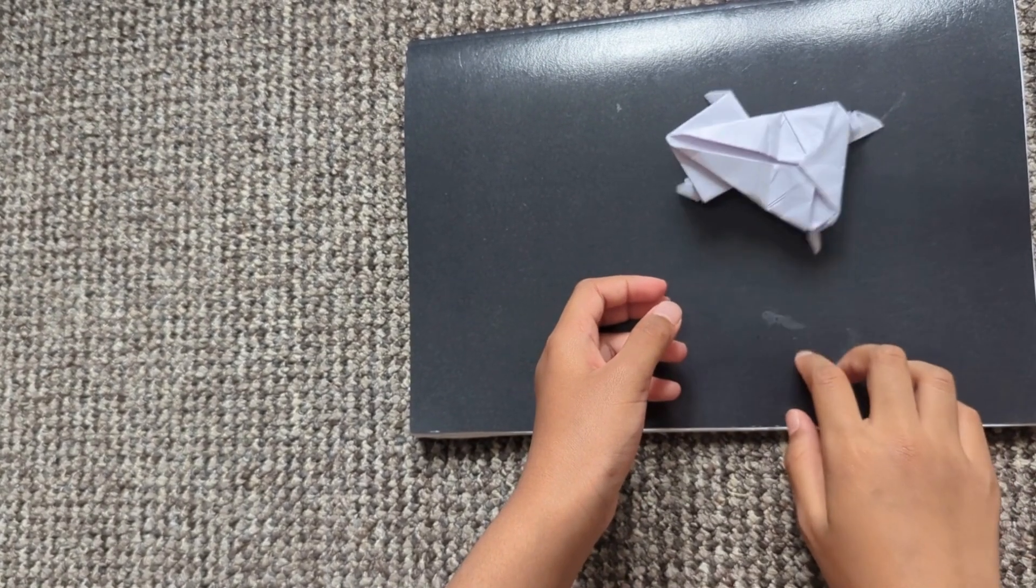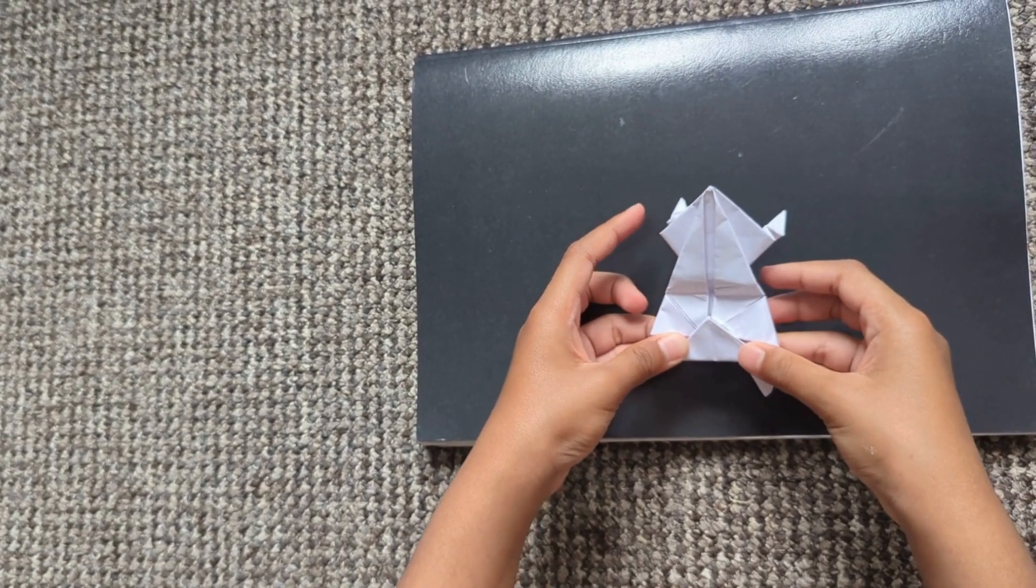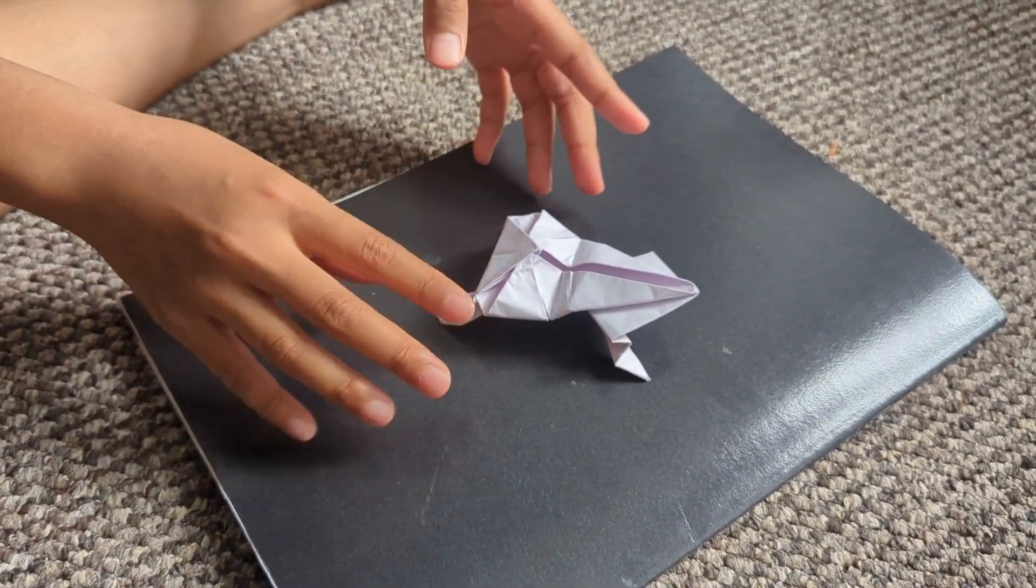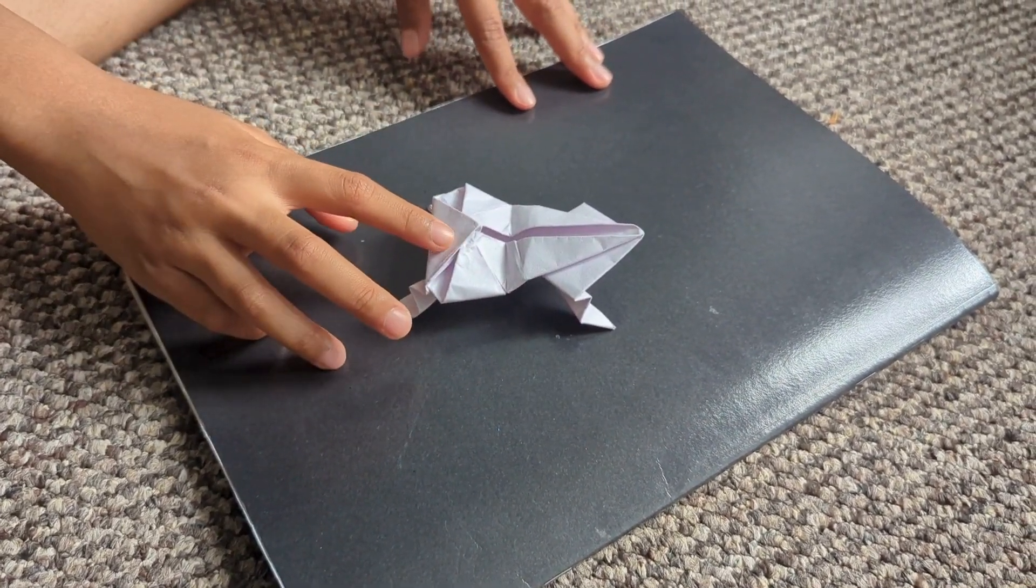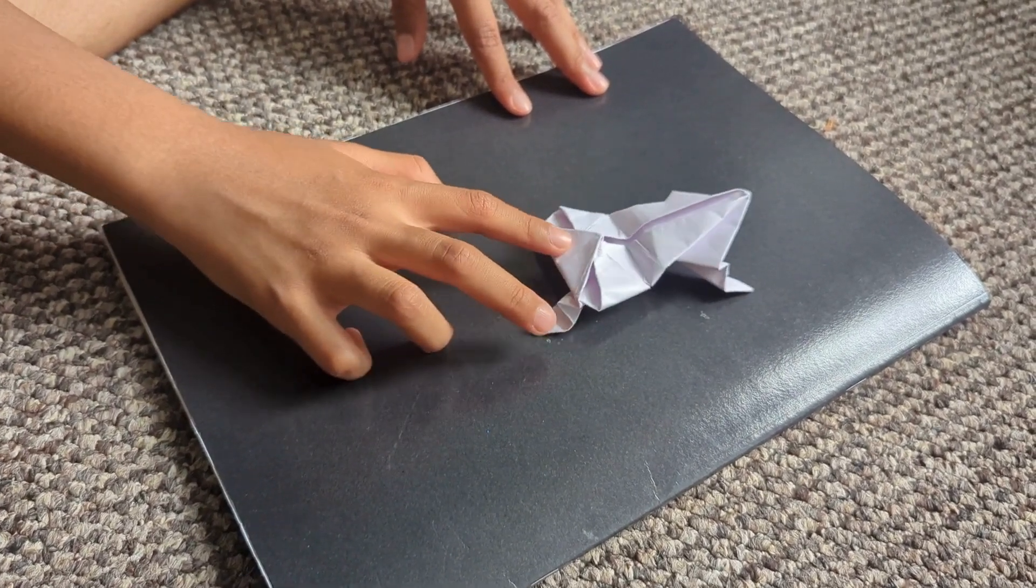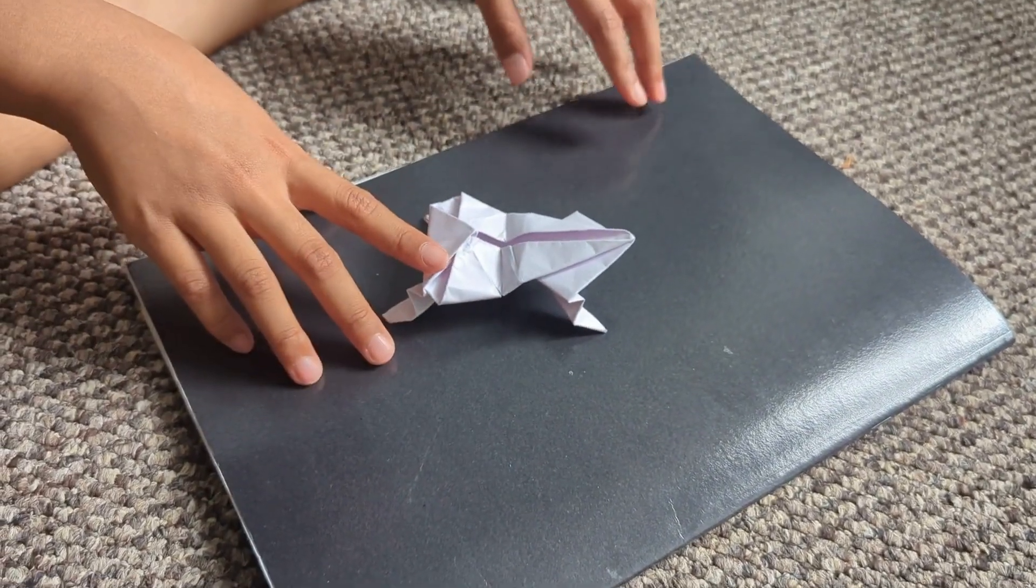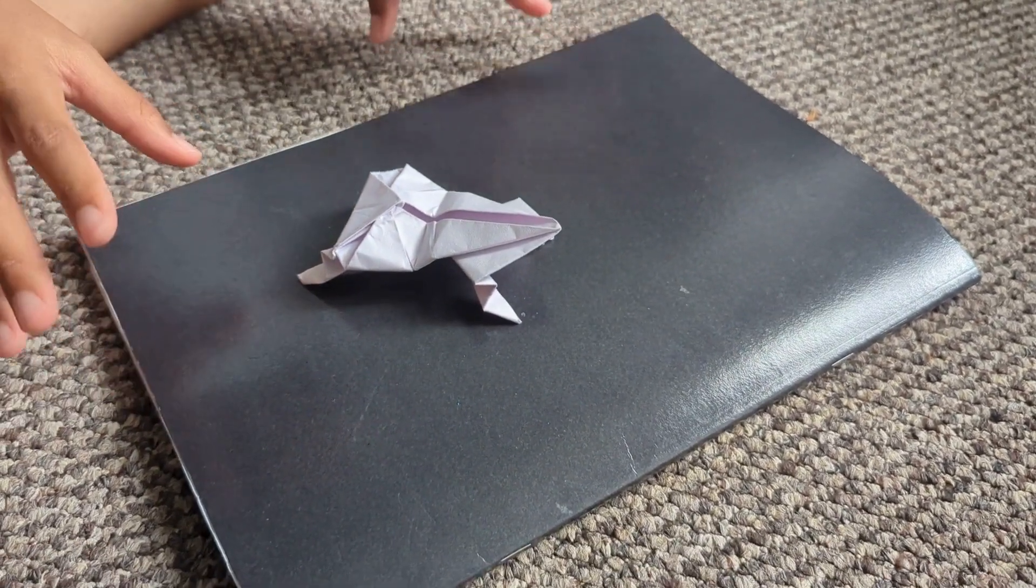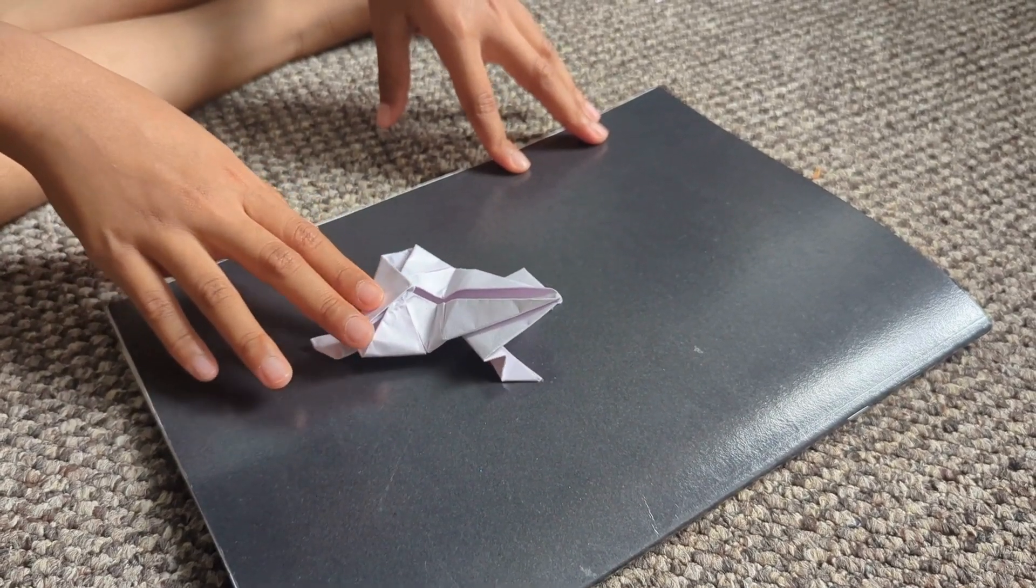Look at this now, it actually jumps. I'm just going to show you how the frog moves. Basically, you just press on this lightly a couple of times and then it will move. If you use it on the carpet, it's kind of hard for it to move. But if you use it on surfaces like books, maybe a table, it will move easier, more easily.